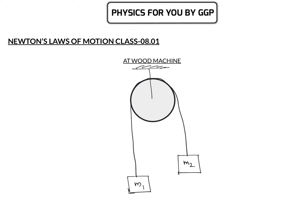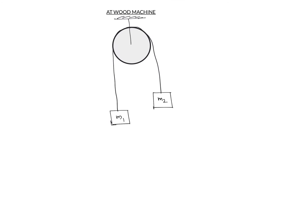We need to find out the acceleration with which these masses are moving. First, we draw the forces acting on the objects: weight m2g acts in the downward direction, and weight m1g acts in the downward direction. The tension in the string is equal to T. Since it is the same string throughout, the tension at each and every point will be the same, so tension is T on both sides.